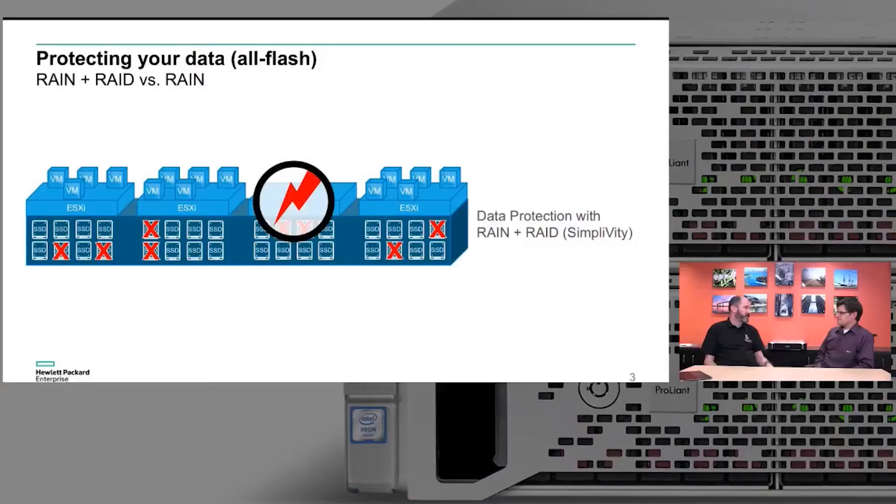A loss of a node could mean it lost too many disks and the RAID array said it can't continue to operate — that would constitute a loss of a node as well. It's usually disk count, a motherboard or CPU failure — or operator error most often. Like shutting down the wrong one. That's not going to generate a support call to SimpliVity, but it could be a resume-generating event for somebody.